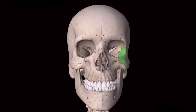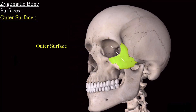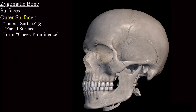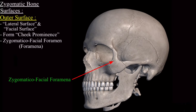Now we come to the bony landmarks of the zygomatic bone, using the left zygomatic bone as a representative. The first surface is the outer surface, also called the lateral surface or facial surface. This lateral surface forms the prominence of the cheek. On the lateral surface, a foramen is present called the zygomaticofacial foramen, present on the zygomatic bone's facial surface.